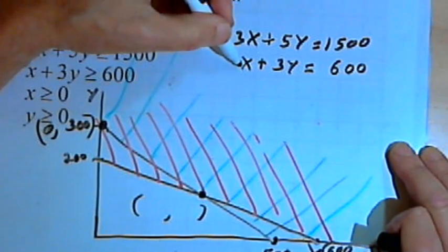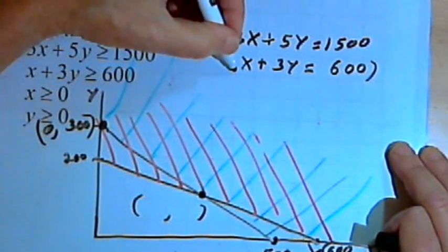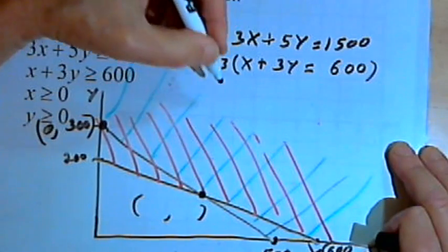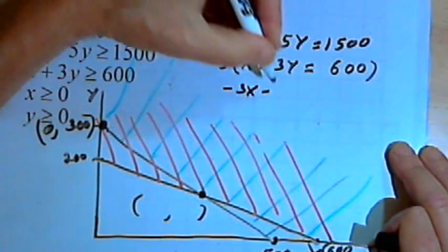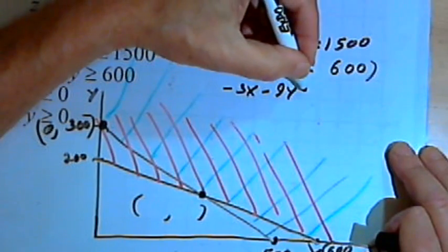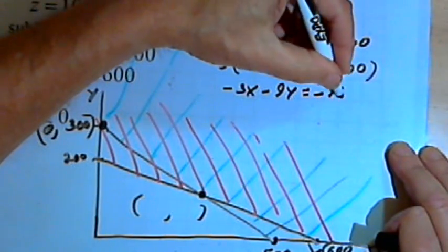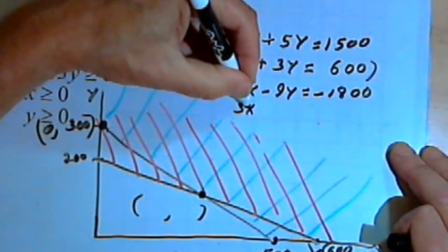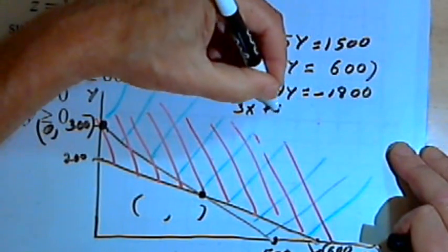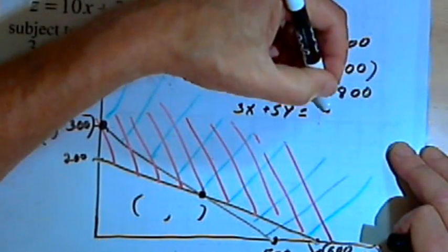I'm going to multiply the second equation by negative 3. That way I can cancel my x's out. So I'll get negative 3x minus 9y equals negative 1800. And I'll add the first equation to that. That's 3x plus 5y equals 1500.